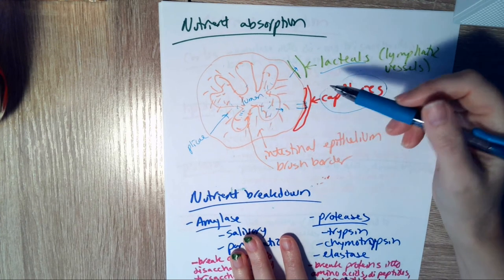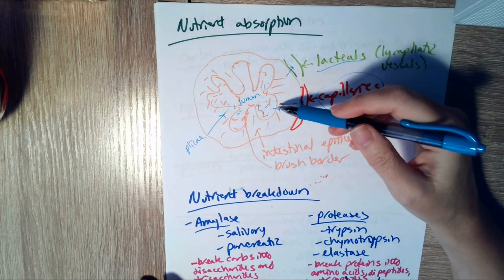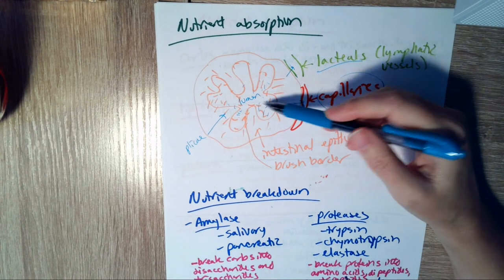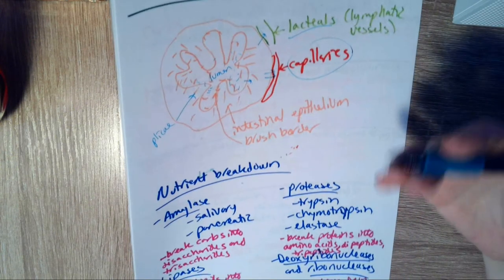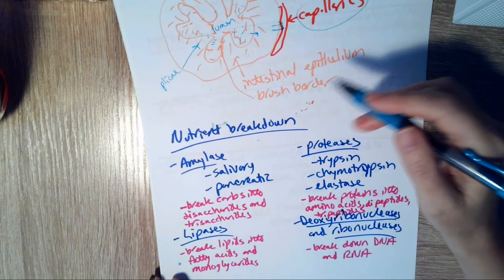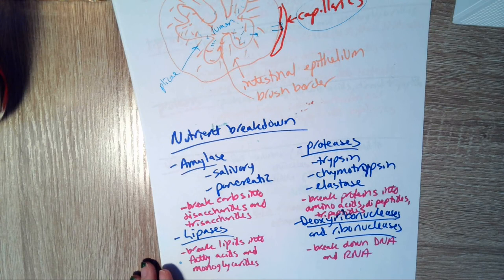But first we need to break them down from what you've eaten, which is way too big to fit into a cell, into things that are small enough to fit into a cell. So we start off by chewing, masticating. That's just physical, mechanical digestion. We're breaking the food down into mush, essentially. But we're not really breaking down anything chemically yet at that point.